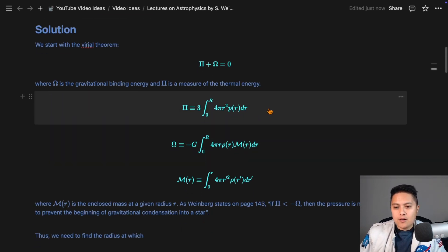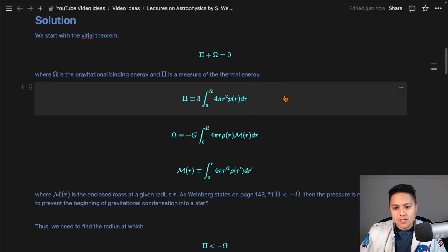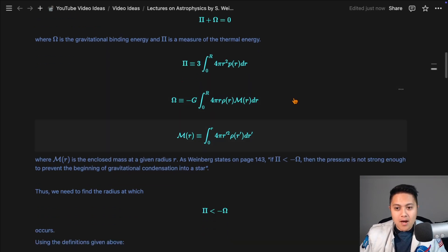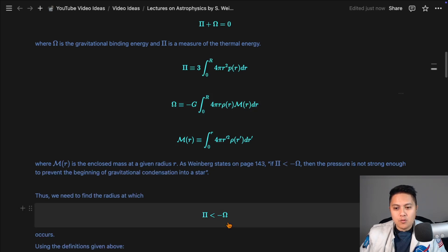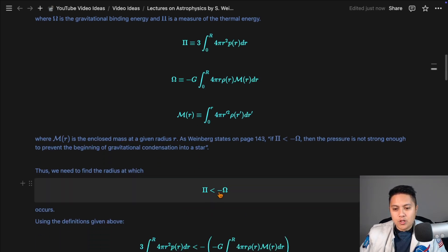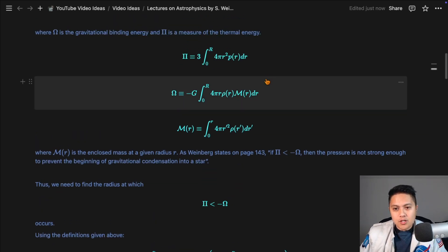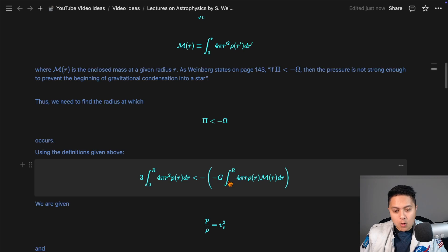So anyways, I don't want to go through the entire derivation here, because I know people really want to see the AI model solve it. So to go about solving this problem, you have to find the radius at which this inequality starts to occur, where the pressure gradient force is no longer enough to withstand the gravitational self gravity. And so the collapse into a star will start to occur.